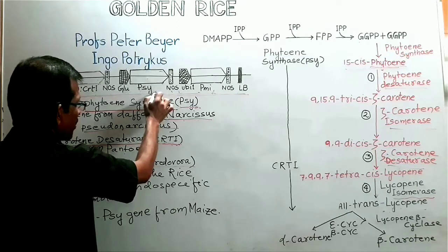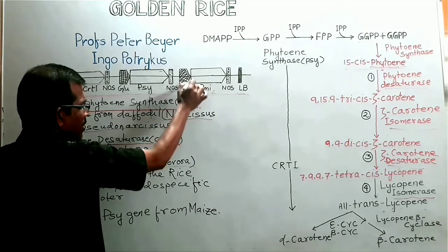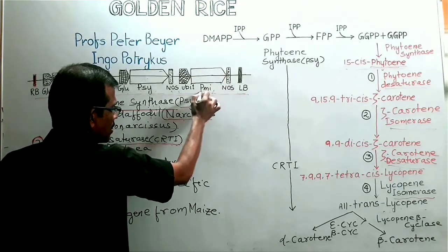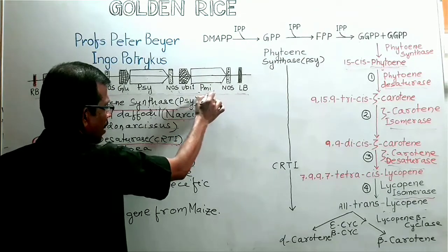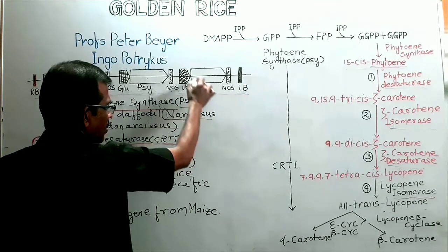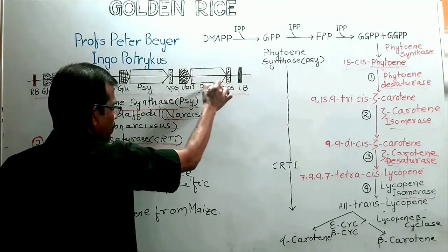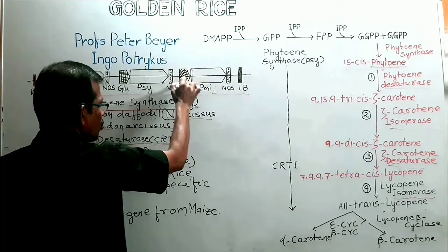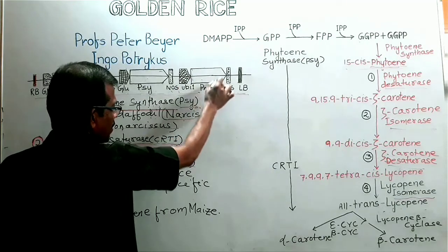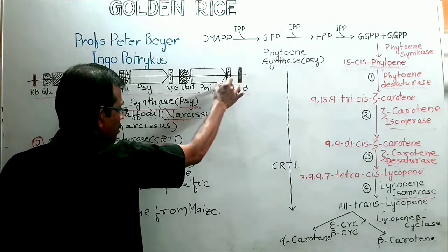After PSY gene, this is the nopaline synthase terminator and another gene is also present in golden rice. This gene is known as PMI. The gene PMI codes for the enzyme phosphomannose isomerase. This gene is obtained from E. coli. And this gene has been placed under the control of polyubiquitin promoter from maize. And after this PMI gene, there is again the nopaline synthase terminator.